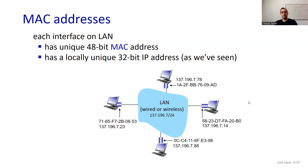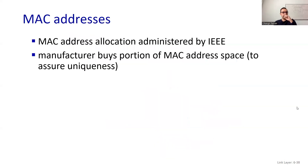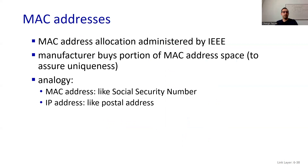MAC address allocation is administered by IEEE. Manufacturers buy a portion of the MAC address space to assure uniqueness. An analogy: MAC addresses are like social security numbers — unique to the device — while IP addresses are like postal addresses. This is why having the ability to change your MAC address is actually a good thing for anonymity.